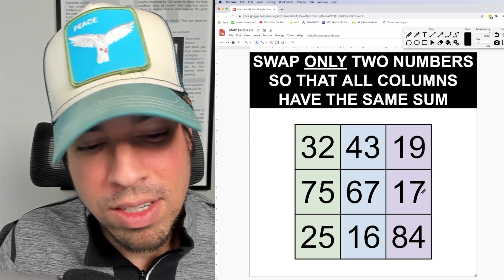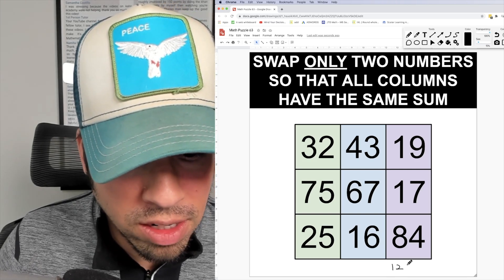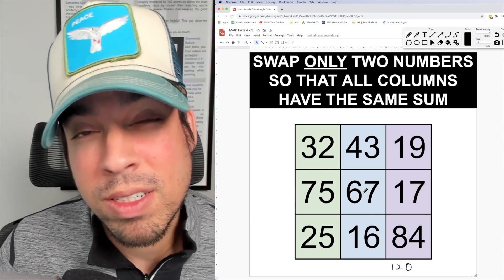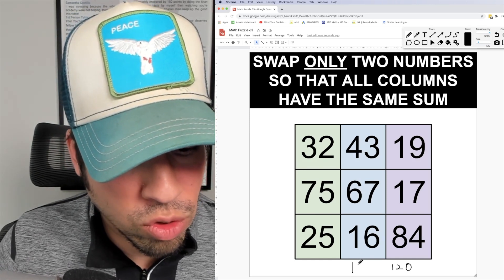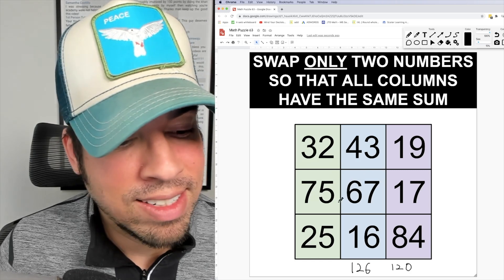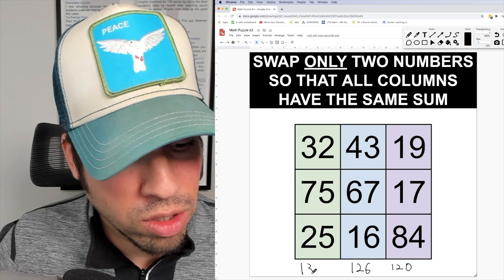19 plus 17 is 36 plus 84 is 120. 43 plus 67 is 110 plus 16 is 126. Last but not least 75 plus 25 is 100 plus 32 is 132.